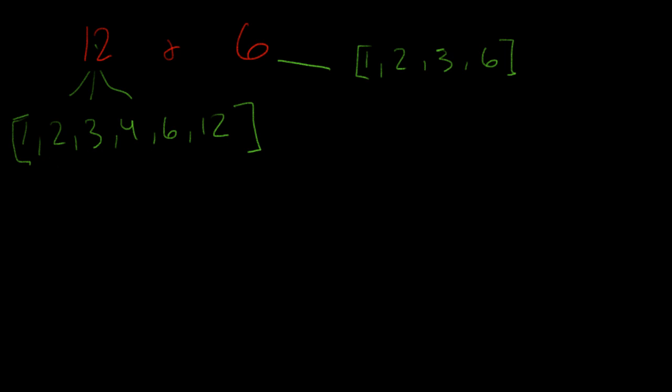Now if you just look at this list, the greatest number that we have in common is 6. So in this simple case, the GCF, we'd write it like this: GCF of 12, 6, or it might be 6, 12. The greatest common factor between those equals 6.